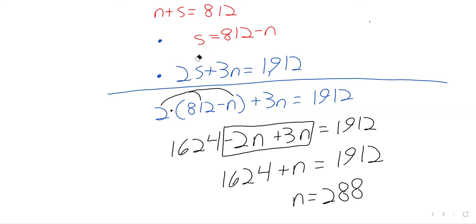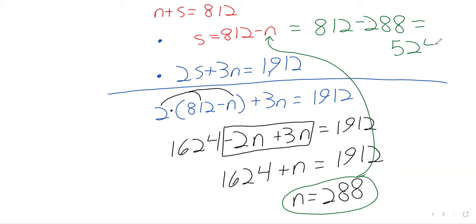And then, as we said earlier, now that we know what n is, s is 812 minus 288. Again, can someone give that to me? 524. So,